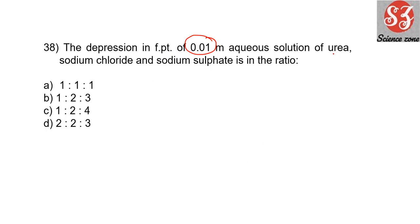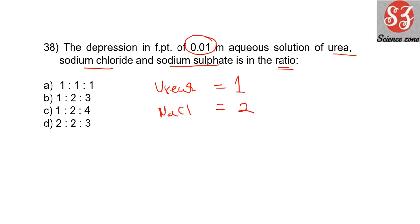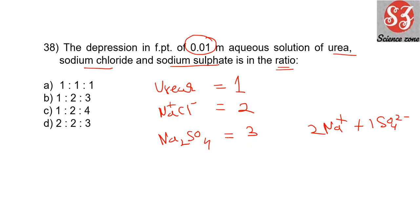Next: 'Depression of freezing point of 0.01 molar solutions of urea, sodium chloride, and sodium sulfate is in the ratio...' All are uni-molar solutions. Urea dissociates into only 1 particle. NaCl dissociates into 2 ions: Na⁺ and Cl⁻. Na₂SO₄ dissociates into 3 ions: 2Na⁺ + SO₄²⁻. Freezing point depression depends on number of ions (colligative property). So the ratio is 1:2:3. Answer is option B.